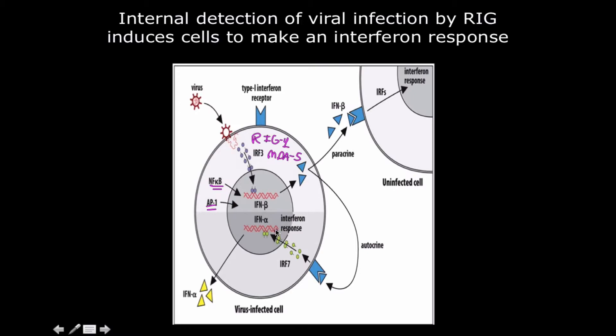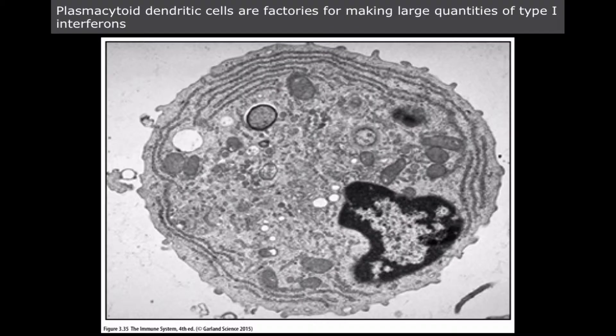This is also going to cause a signal transduction pathway. This is going to cause transcription and translation of interferon alpha. The transcription factor for interferon alpha, if you're just curious, is this IRF7 here. That's not really important so much as the fact that we're producing a lot of interferon beta and a lot of interferon alpha all on our own. They're kind of starting this thing going. It could be any cell in your body, could be your epithelial cells if they wanted to be.